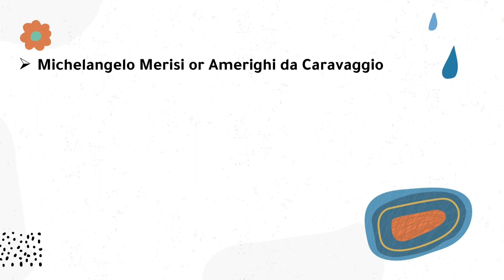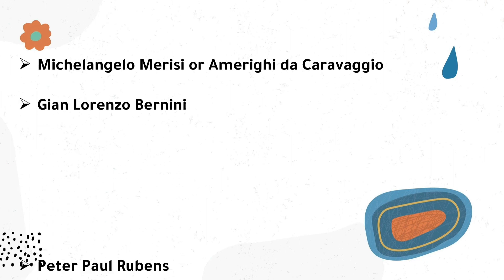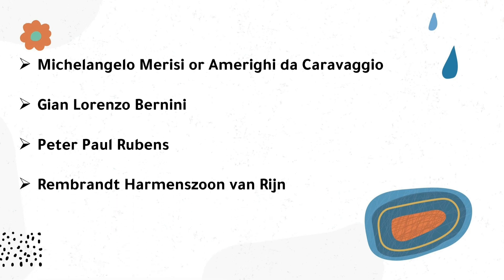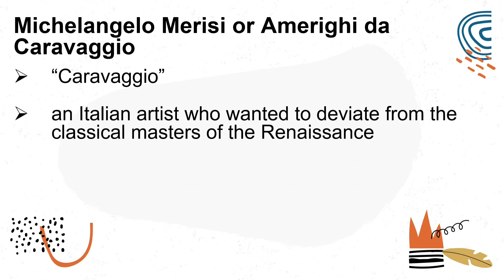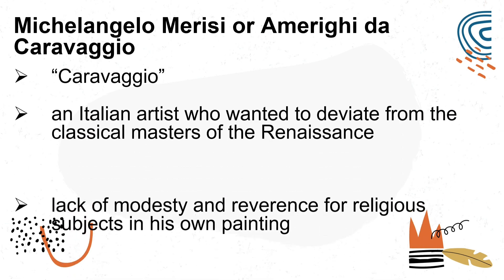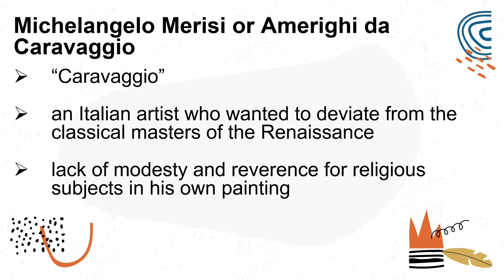Here are the famous artists during the Baroque period: Michelangelo Merisi or Amerigi da Caravaggio, Gian Lorenzo Bernini, Peter Paul Rubens, Rembrandt Harmenzoon van Rijn, and Diego Velazquez. Caravaggio wanted to deviate from the classical masters of the Renaissance. Because of his lack of modesty and reverence for religious subjects in his paintings, he was an outcast in his society. His paintings were more of still life — focused on arrangements of objects — but for Caravaggio, he was more focused on fruits.